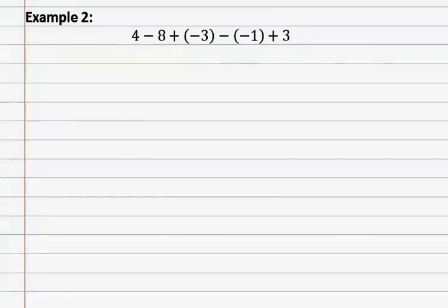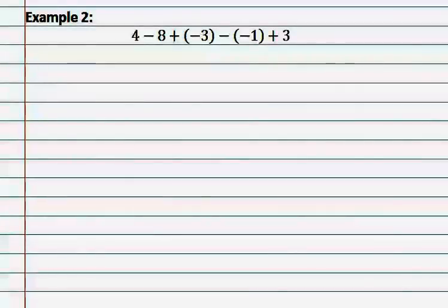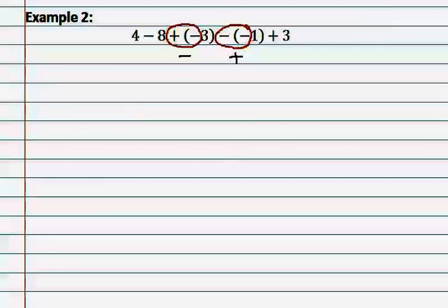Example two. In example two, we can see that once again we have double signs. We must first address these double signs before we are able to solve the problem. Remember, double signs follow the rules for multiplication: a positive and a negative make a negative, and a negative and a negative make a positive. Since we have done nothing to the rest of the problem, all other parts are brought straight down.